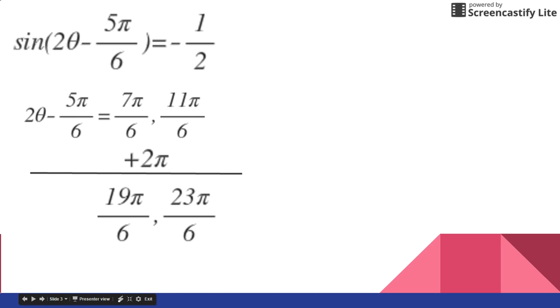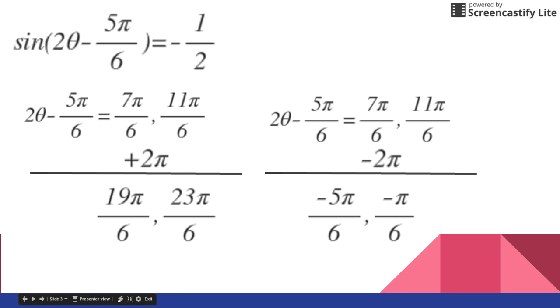And since there's a horizontal shift, usually the best way to handle it if you have a horizontal shift is to not only add 2π, but to subtract 2π as well. So I'm going to do that over here on the right-hand side. I'm going to subtract 2π and get additional answers here. So I get negative 5π over 6 and negative π over 6.